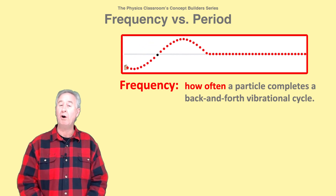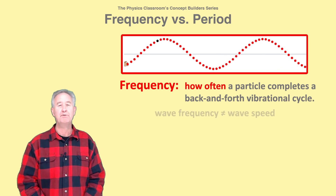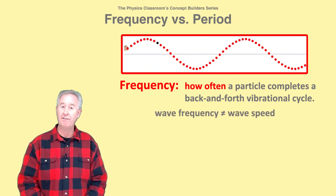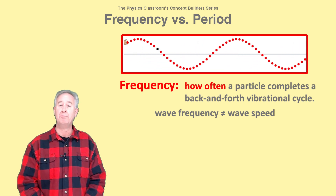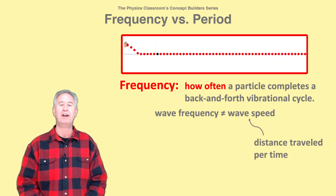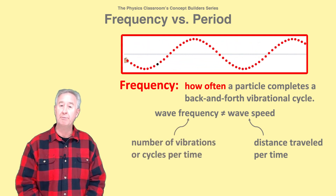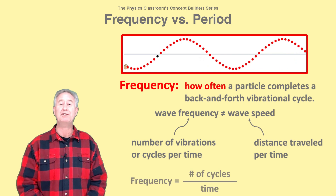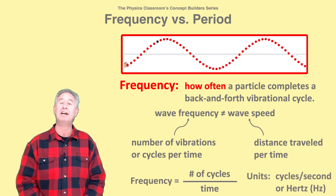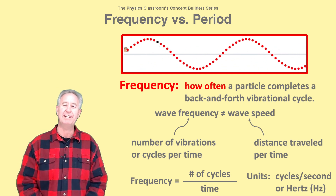Frequency refers to how often a particle completes a full vibrational cycle. Frequency is not to be confused with speed. Speed refers to how fast a crest is moving along the medium — it is a distance per time, in units of meters per second. But frequency is the number of cycles, or number of vibrations, per time. It is calculated by dividing the number of cycles by the time, and it has units of cycles per second, or hertz, abbreviated Hz.